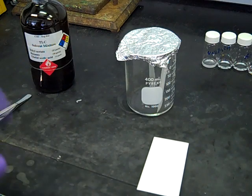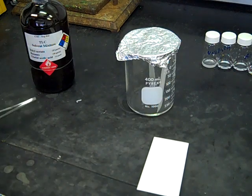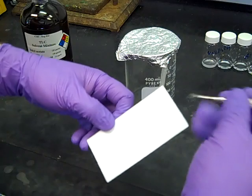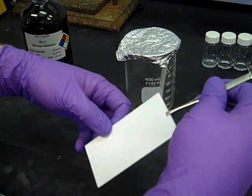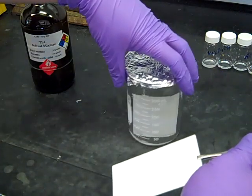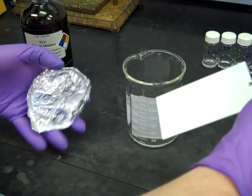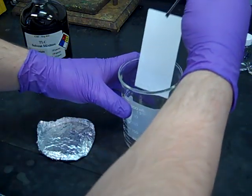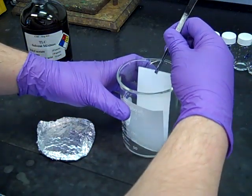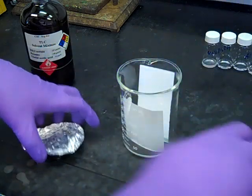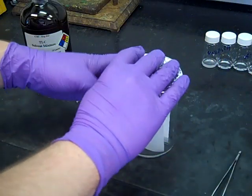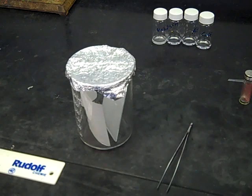Now that the vapors have filled up, we'll take our plate—you can use your tweezers at this point—open up the foil cap, make sure the plate doesn't touch that filter paper wick, and drop it down inside. Put the cap right back on top. At this point it's traveled an acceptable distance up the plate. I'm going to open the cap and pull the plate out.